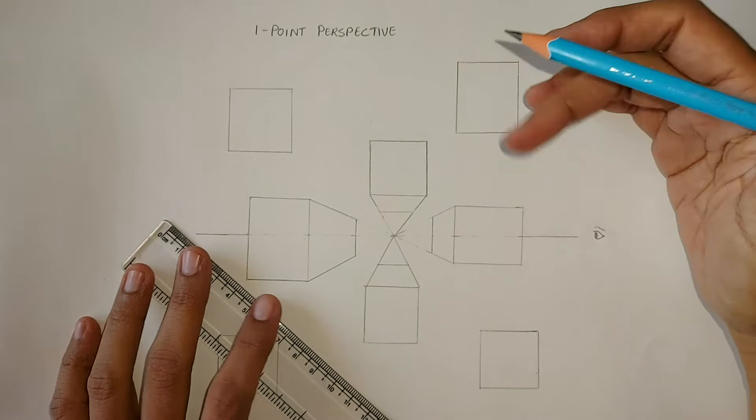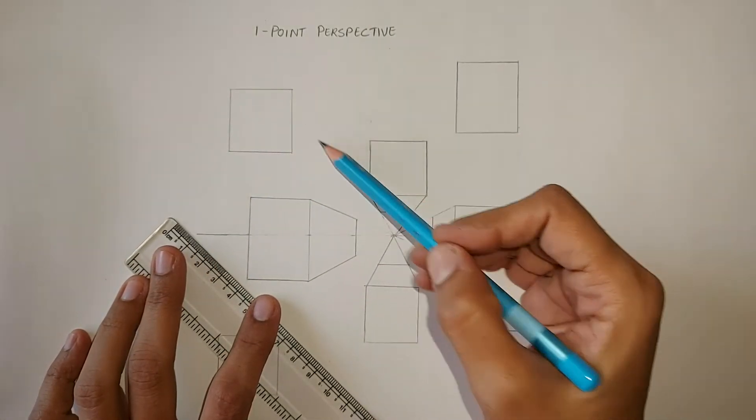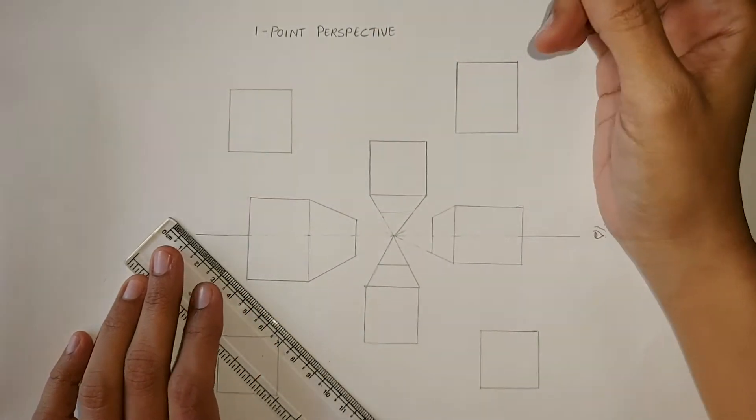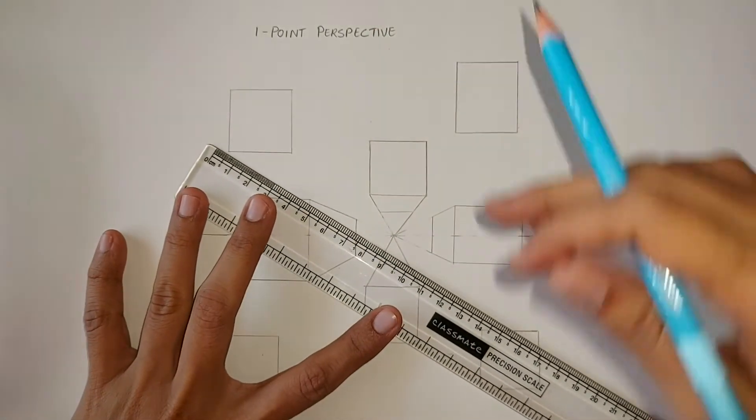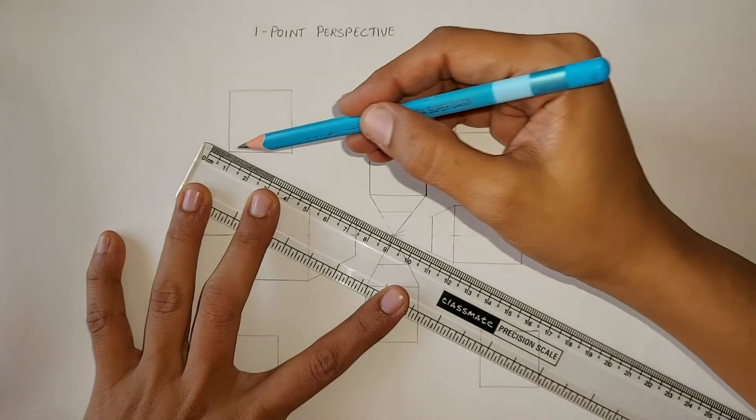In this case, we have three corners that are going to meet the vanishing point. Now, how do we determine that? We create the converging lines from the corners that are not getting obstructed by the parts of the object. I will just show it.